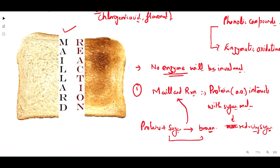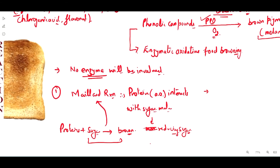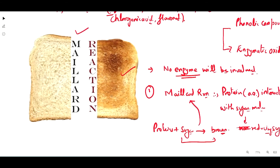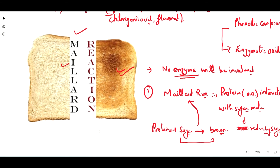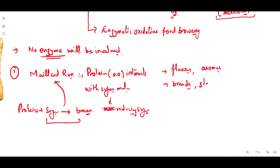This type of reaction is known as the Maillard reaction. It is used for the production of different types of flavors and aromas in the food industry, especially in breads. As you can see here, simple bread changes to a brown color. It is also used in steak browning or potato browning.